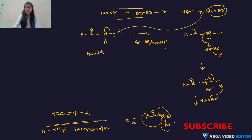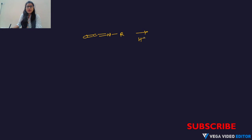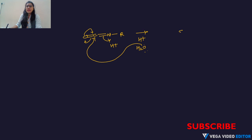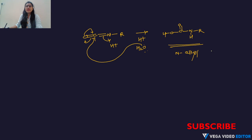In the next step, the alkyl isocyanate reacts with water under acid hydrolysis. The lone pair of oxygen attacks the carbonyl carbon of the isocyanate, and nitrogen takes a proton from the acid. We get R–NH–COOH, which is called alkyl carbamic acid.